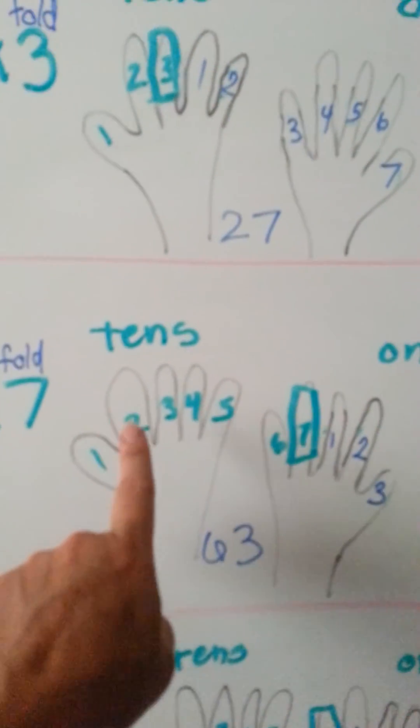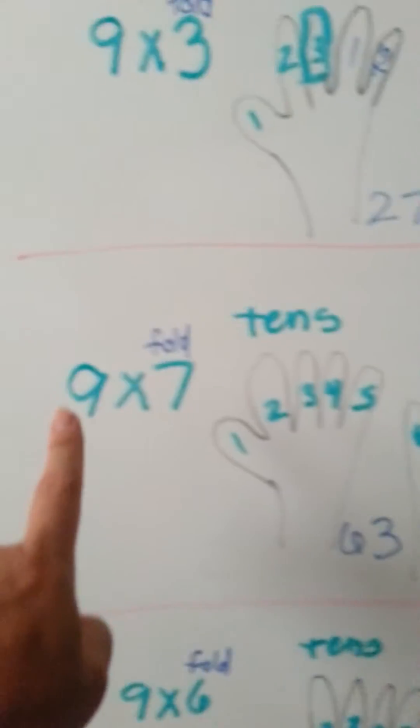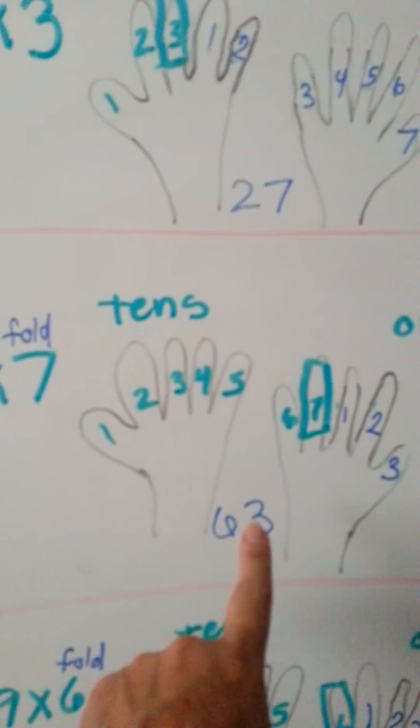So for tens, we have 1, 2, 3, 4, 5, 6 tens, and 1, 2, 3 ones. So 9 times 7 is 63.